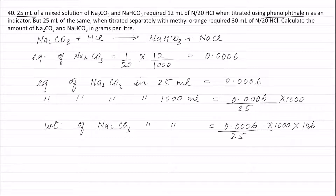From this, weight of sodium carbonate = equivalence × equivalent weight of Na₂CO₃, which is 53 (molecular weight 106 ÷ 2). Solving this, the weight of sodium carbonate in 1000 ml or 1 liter of solution = 2.544 grams. Therefore, the amount of sodium carbonate present in 1 liter of solution is 2.544 grams.